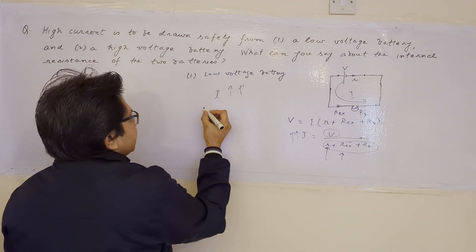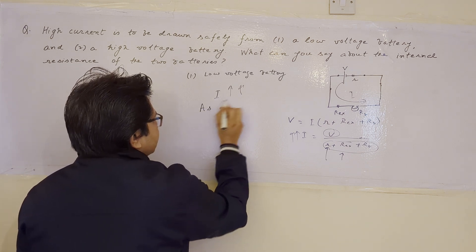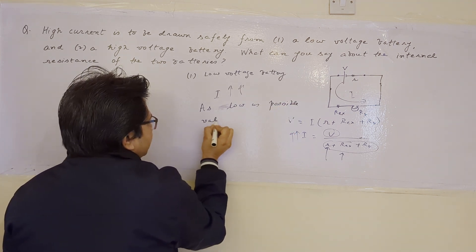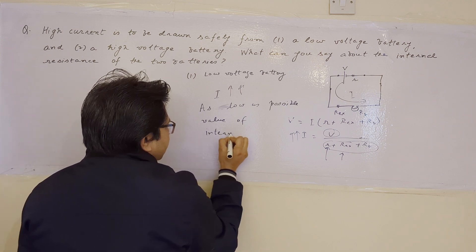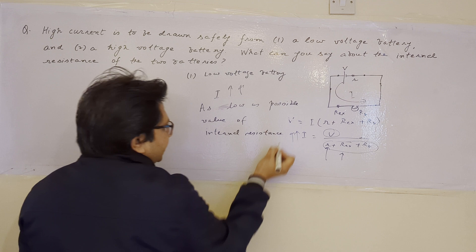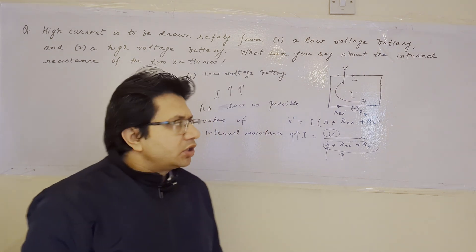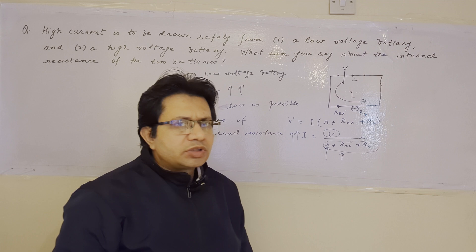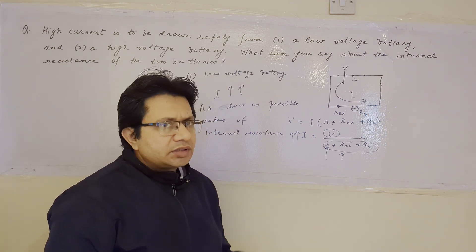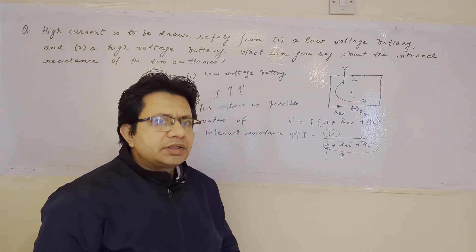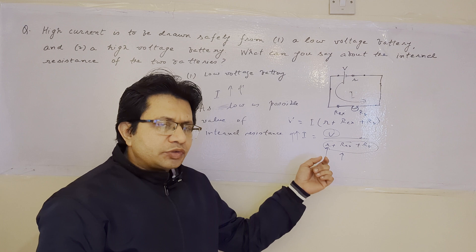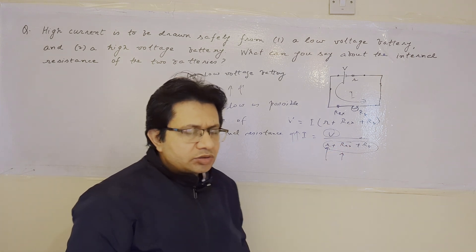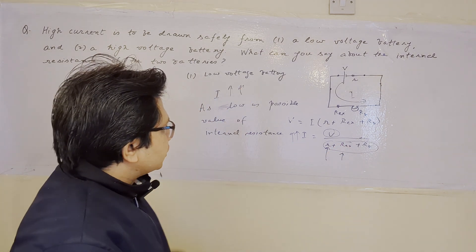The answer for Part 1 is: we should choose the internal resistance as low as possible. We cannot make it zero — an ideal battery has zero internal resistance, but that is not practically possible. A practical battery always has some internal resistance. We choose a battery with a very low internal resistance value. When internal resistance is less, the denominator becomes less, and the current becomes higher — which is our requirement.